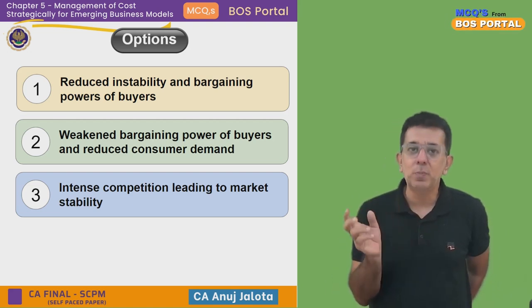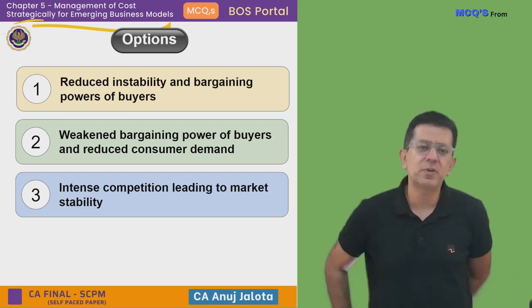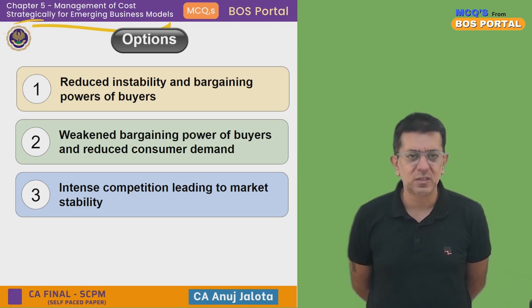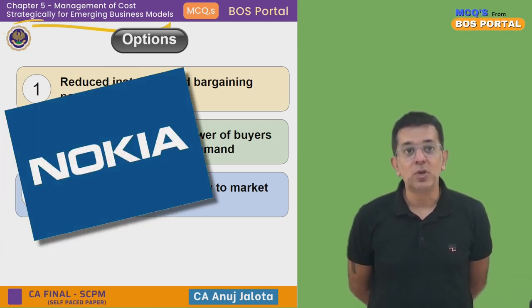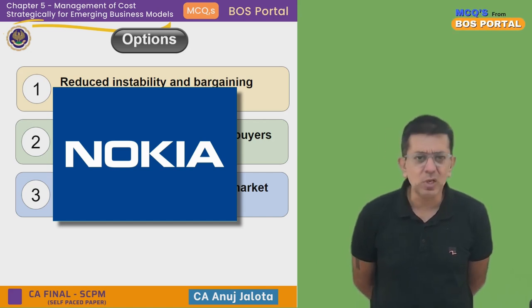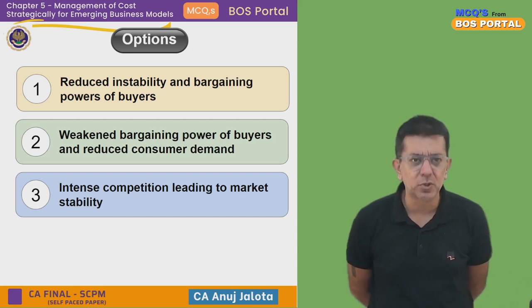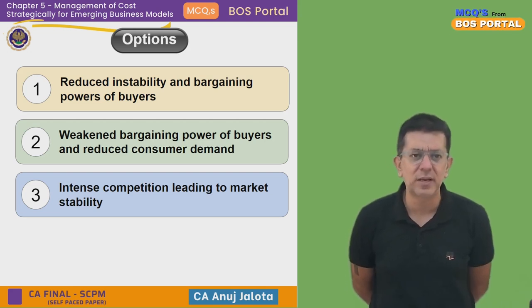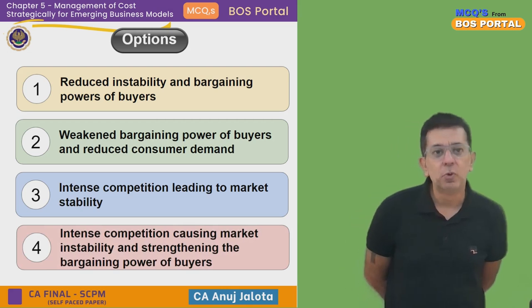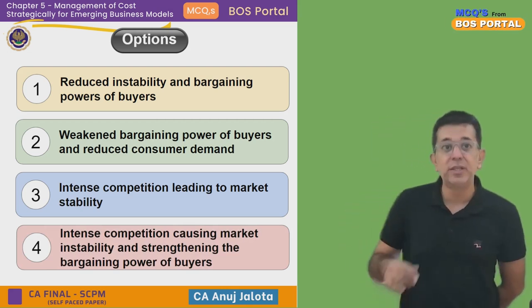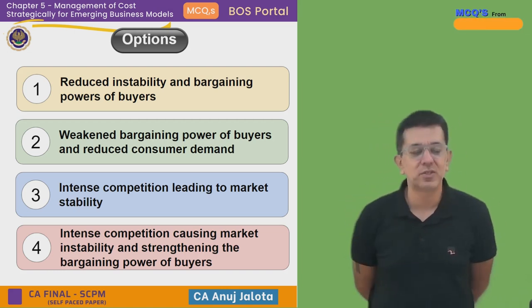Option three says 'intense competition leading to market stability' — no, it leads to market instability. If a company cannot match the competition, they will disappear from the market. In my earlier phone market example, Nokia is nearly gone due to hyper competition. So option three is also not the answer — there is no market stability here.